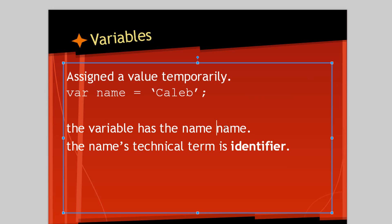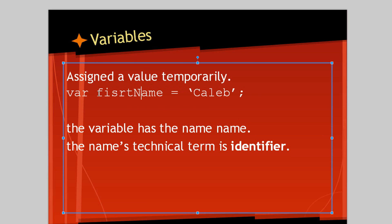The variable has the name — so you could make it something like first name — but in this example, this variable has the name 'name'. So this is what we call the variable. The name's technical term is identifier. This right here is known as the identifier. This variable, 'name', has a value of Caleb.